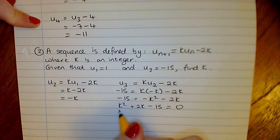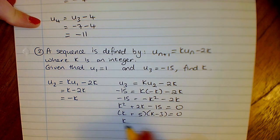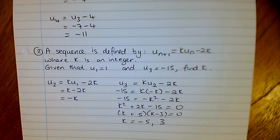Bring everything to the one side, factorize, so k equals minus 5 or 3.